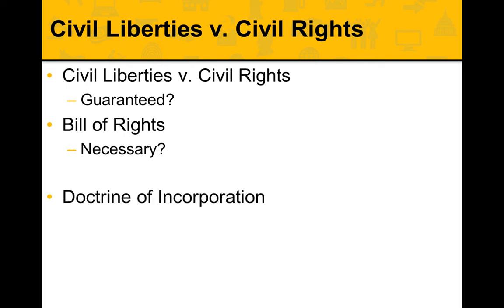The way the Bill of Rights has been applied is called the doctrine of incorporation, and this is where the 14th Amendment is important. The First Amendment begins with the words 'Congress shall make no law respecting an establishment of religion.' For the first 100 years of our country, the Supreme Court read the Bill of Rights literally and limited civil liberties to the acts of Congress — limiting the First Amendment only to what Congress could do.